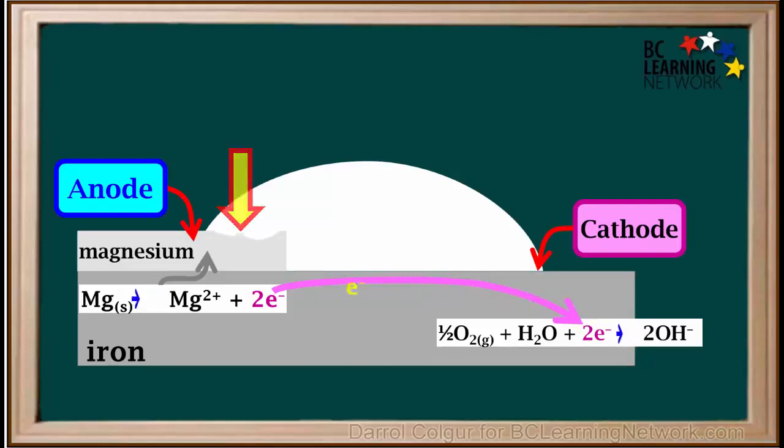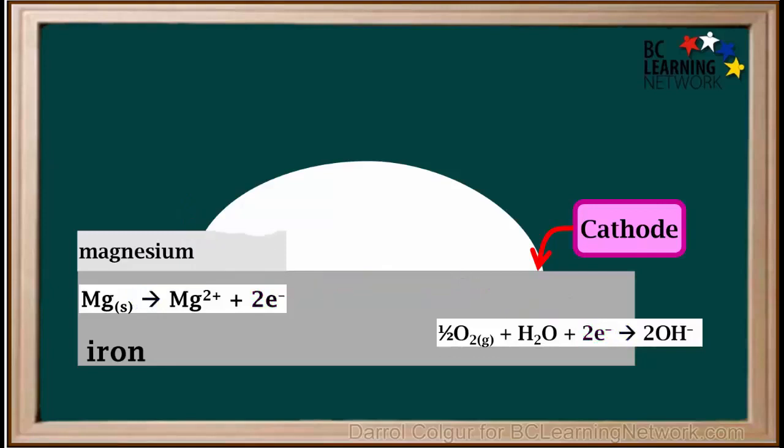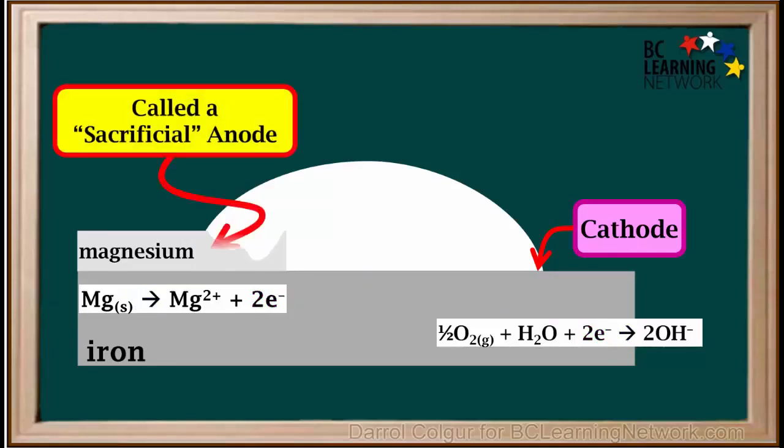Looking at the magnesium block, we see that as it is oxidized, it is gradually eaten up. When the magnesium block has been consumed, it is simply replaced by a new one. Because magnesium is consumed in order to save the iron from rusting, it is sometimes called a sacrificial anode.